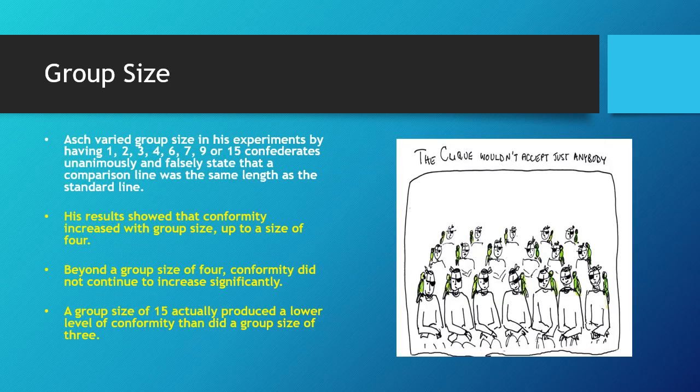Asch varied group size by having 1, 2, 3, 4, 6, 7, 9, or 15 confederates who would unanimously and falsely state that a comparison line was the same length as a standard line. His results showed that conformity increased with group size up to a size of 4 — with a group of 4 plus the actor, you're more likely to follow what everybody else says. Beyond a group size of 4, conformity did not continue to increase significantly. In fact, a group size of 15 produced a lower level of conformity than a group size of 3, because people started to think something was seriously wrong and began questioning it.